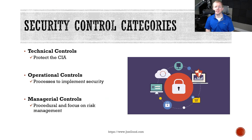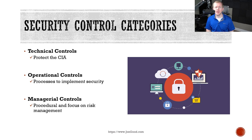Let's get into the video. When security policies are introduced, it's simply a way of laying out control objectives that we want to achieve. Controls themselves are specific measures that we use to fulfill security objectives in our organization. There are three main categories of controls that you need to be aware of.